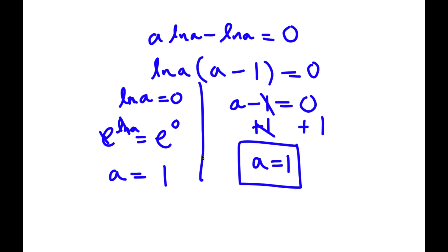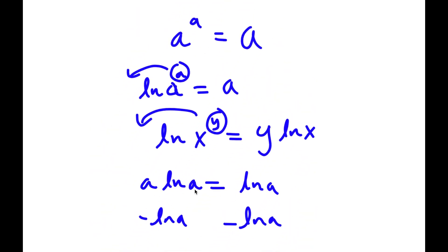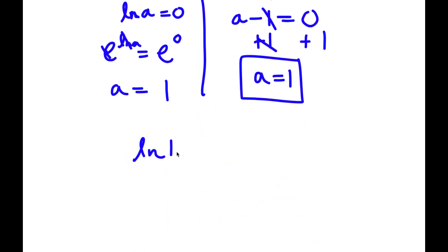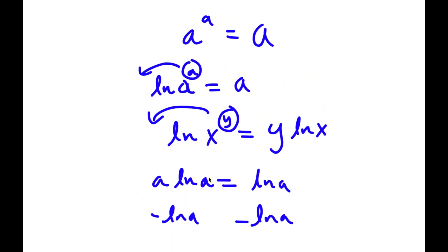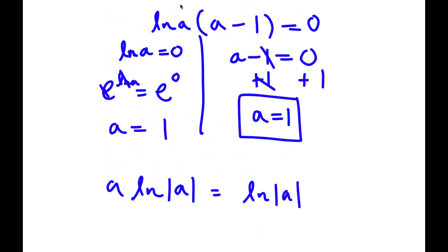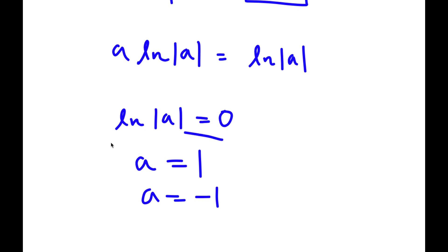Because there is another solution, instead of simply taking ln, I'm going to take ln of the absolute value on both sides. So now I have ln of the absolute value of a to the a is equal to ln of the absolute value of a. When I work through this, instead of ln a I now have ln of the absolute value of a equal to zero, which means a equals one as well as negative one. So these are my two solutions.